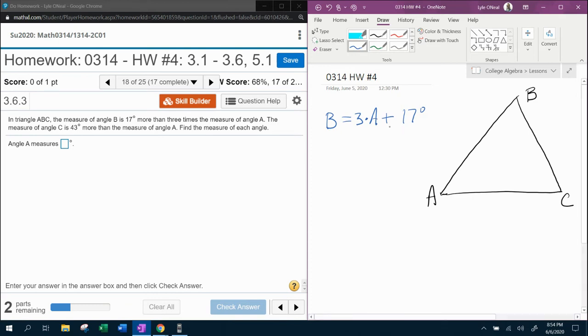Let's reread it and make sure that this looks the way it should. B is, B equals 17 degrees more than, 17 degrees more than 3 times angle A, 3 times A. I feel pretty good about that. Let's actually put that in the picture here. That's going to be 3A plus 17. That is angle B.